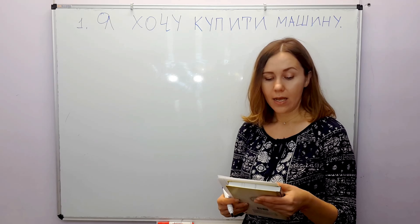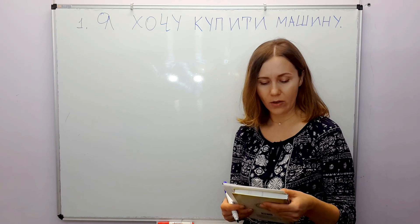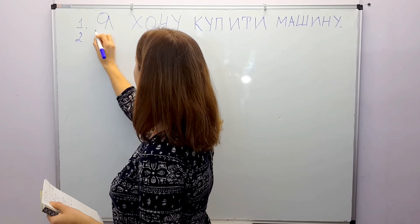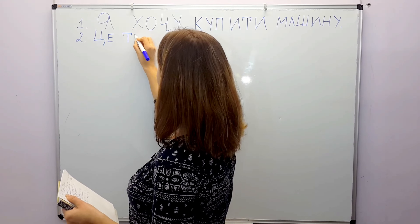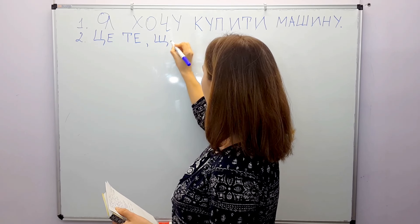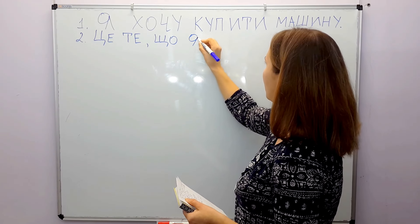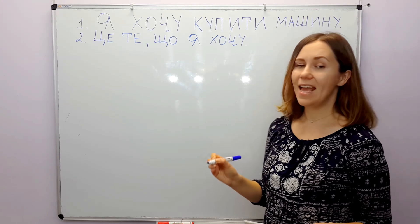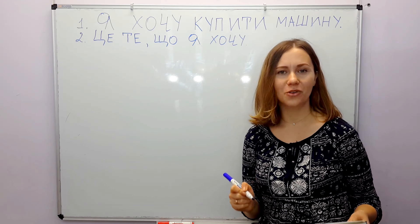Наступне речення — the next sentence. This is what I want. Це те, що я хочу. This is what I want — Це те, що я хочу.